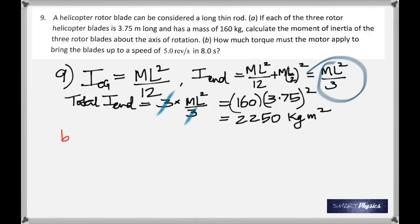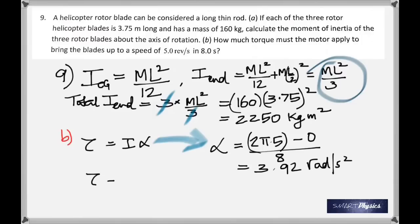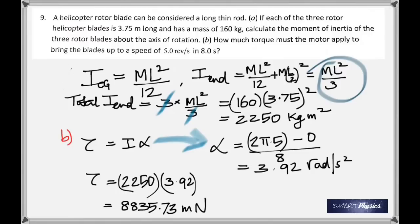For part b, how much torque must the motor apply to bring the blades up to 5 rev/s in 8 seconds? The initial speed is 0; final is 5 rev/s, so f = 5. Angular acceleration α = (2π×5 − 0)/8 = 3.92 rad/s². Torque = Iα = 2250 × 3.92 = 8,835.73 N·m.